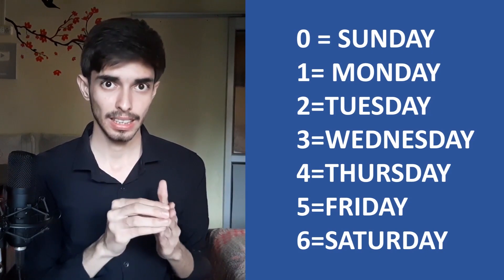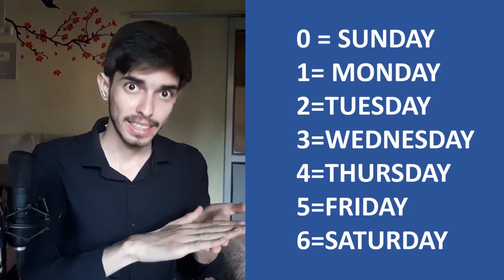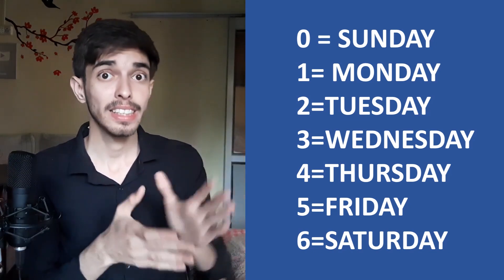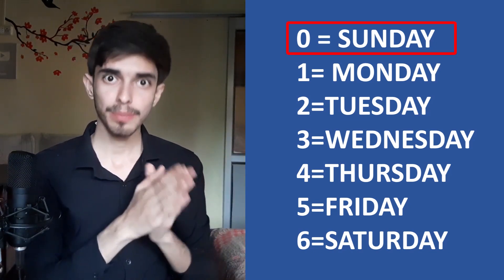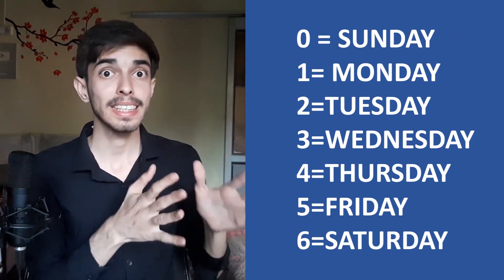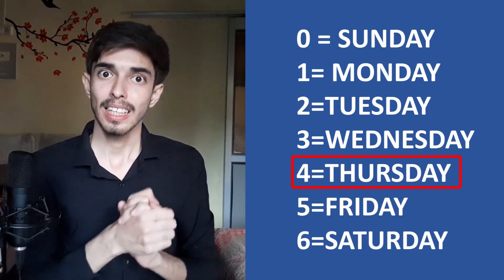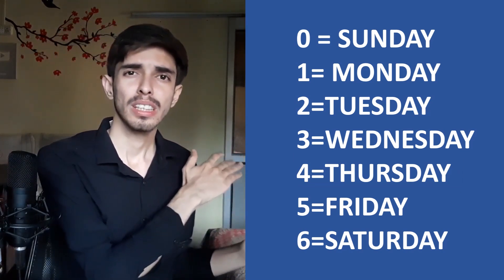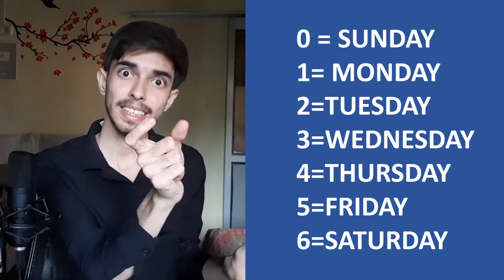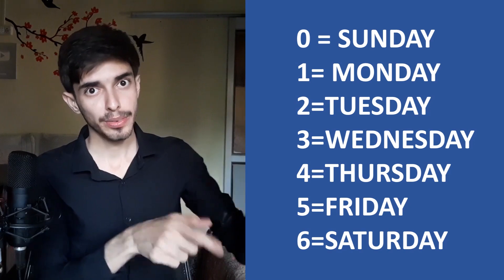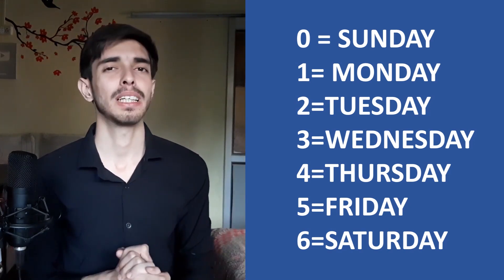Odd days is simply the number from 0 to 6. If 0 odd days have passed for a certain date, then on that date it is a Sunday. For example, if 4 odd days have passed, then it is a Thursday. We are just starting from Sunday, calculating all the way to that day, and seeing how many odd days are passed. That odd day number gives us the day of the week.